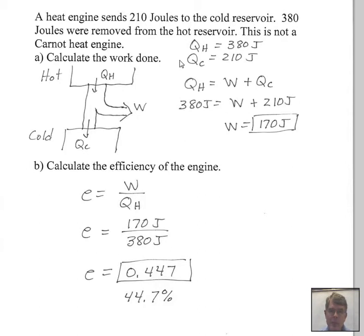So we have QH 380, QC of 210. We balance energy. Energy comes out of the hot reservoir. It goes to two locations, work being done and the cold reservoir. So 380 equals unknown plus 210. 170 joules is the work that's done.